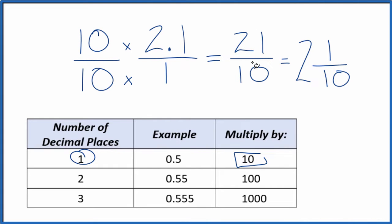These are all equivalent fractions. 21 divided by 10, that'll give you 2.1. 2 and 1 tenth, that's equal to 2.1 as well. This is Dr. B. Thanks for watching.